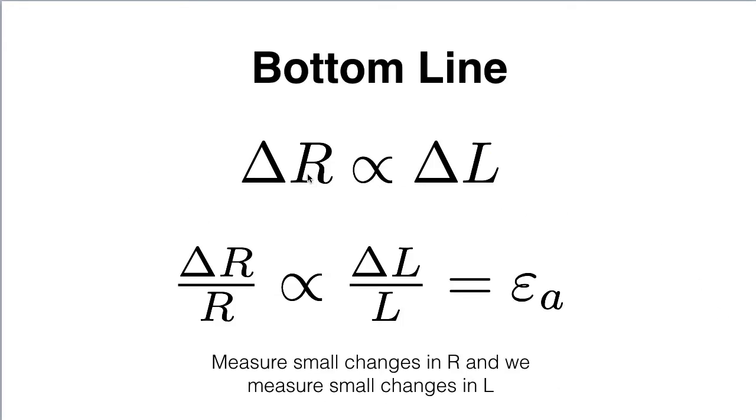So as a bottom line, the change in resistance is proportional to the change in length. So we can use that change in resistance to measure how much the length changes. And we'll measure small changes in resistance relative to the original resistance and small changes in length relative to the original length, which happens to be, by definition, the strain of the material. And those two are going to turn out to be proportional.